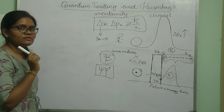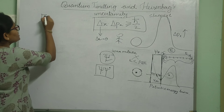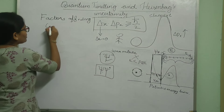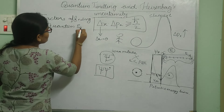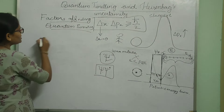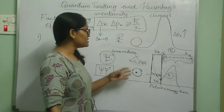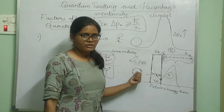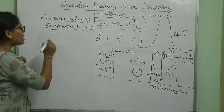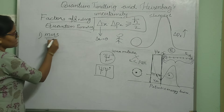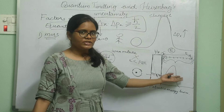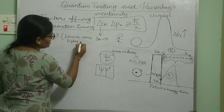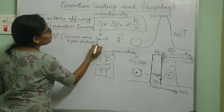Now we will see the factors affecting quantum tunneling. The first factor is the mass of the particle. Lower mass means higher wave nature, which means a higher probability of the particle appearing on the other side of the barrier. So: lower mass → higher probability of quantum tunneling.